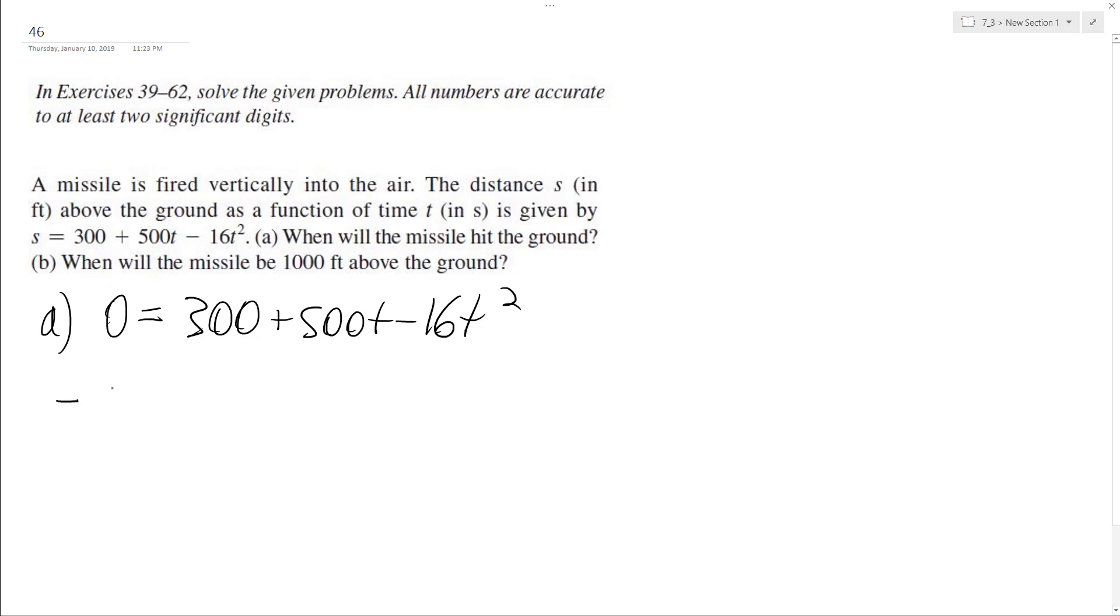Opposite of b, so negative 500 plus or minus square root of b squared, 500 squared minus 4 times negative 16, 4ac, times 300, all over 2 times a, which is 2 times negative 16.